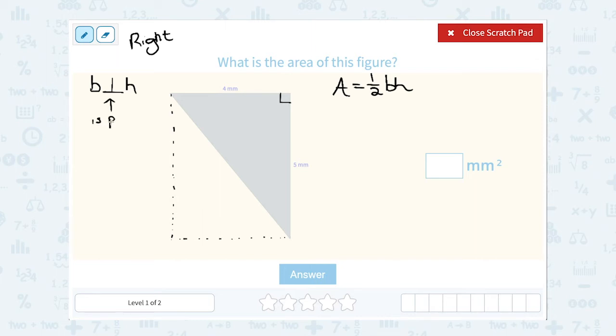Perpendicular just means that it's at a 90 degree angle. So that means the base and the height are always the two sides of the triangle that meet at a 90 degree angle. Now it doesn't really matter which one you call the base and which one's the height. Together they meet at a 90 degree angle.